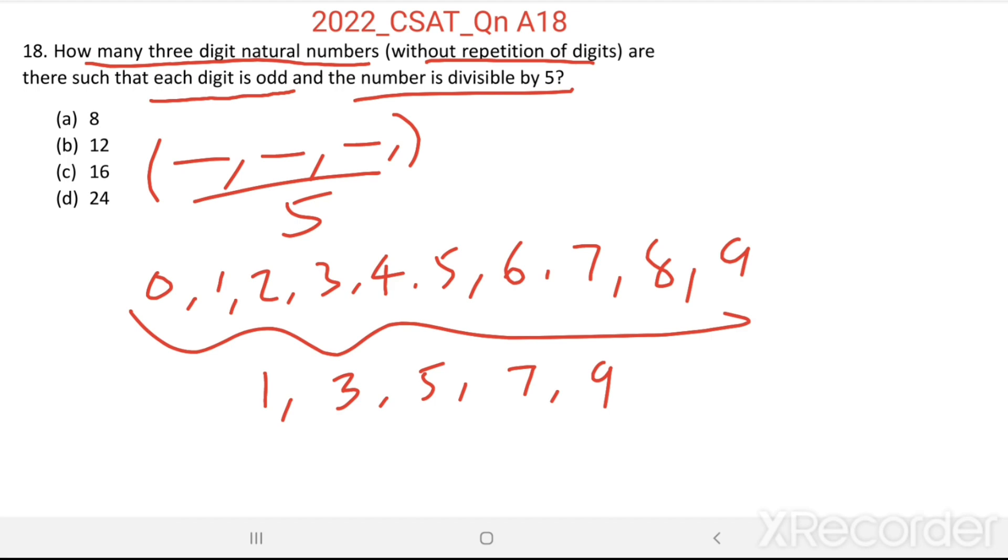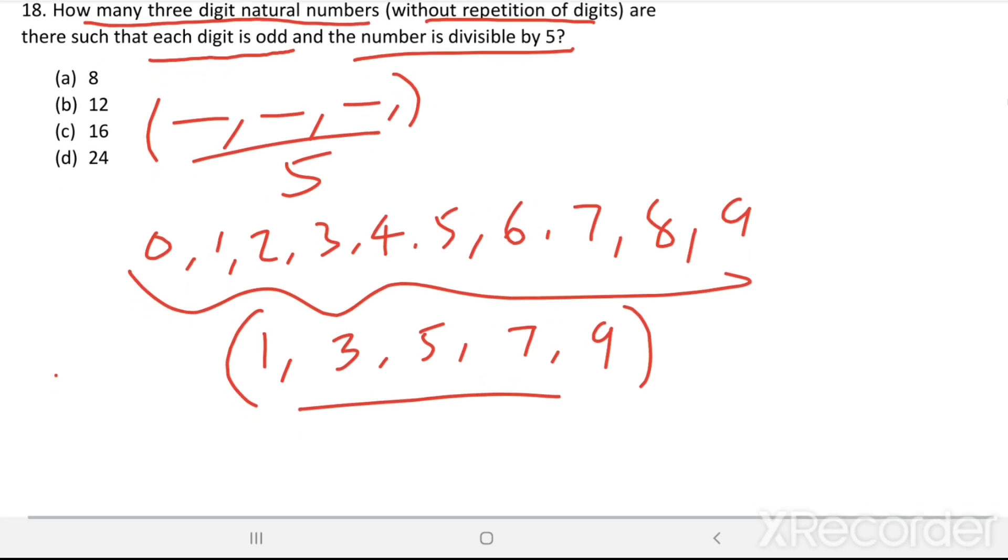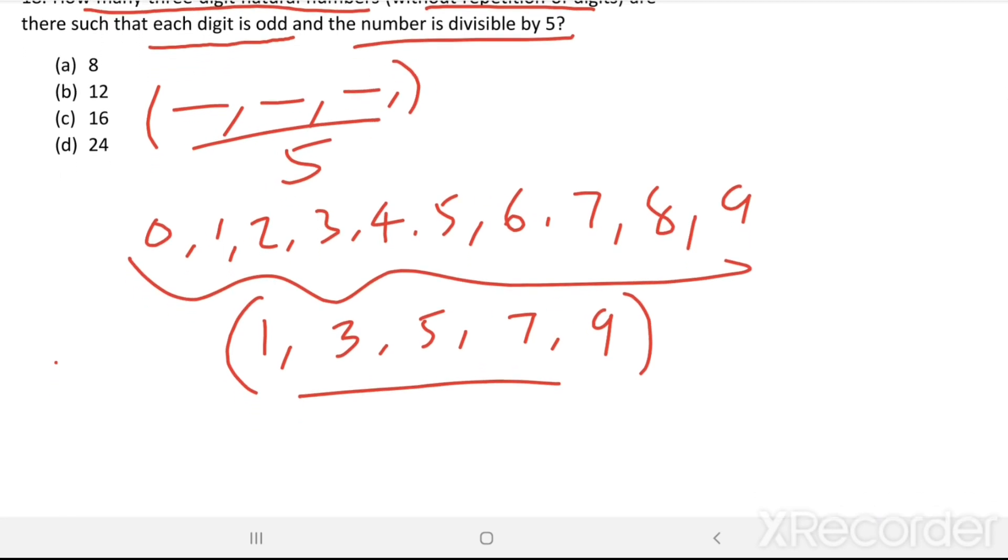So we have to make three-digit numbers using these five digits and it should be divisible by 5 also. What is the divisibility test for 5?